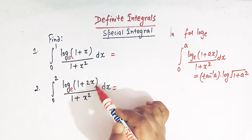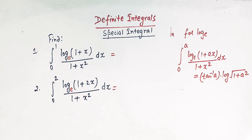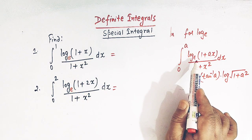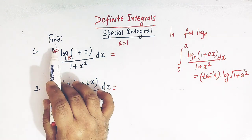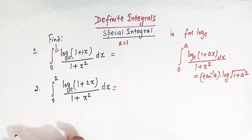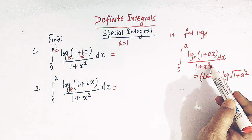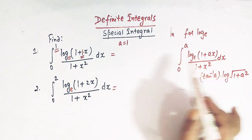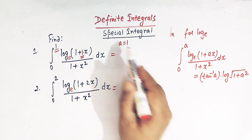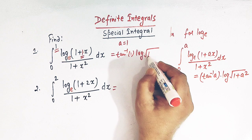We'll compare these two integrals with this general form and quickly write their values. For the first integral, we have 0 to 1, so comparing with the general form, the value of a is equal to 1. Here we have log(1 + x), which can be written as log(1 + 1·x), so a = 1 and the denominator is 1 + x squared. The direct value is obtained by putting a = 1 in the general result: arctan(1) times log of the square root of 1 + 1 squared.